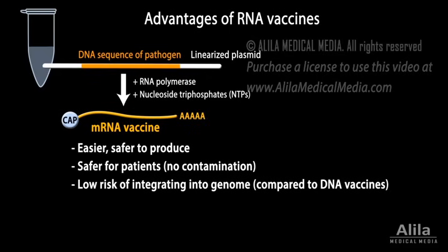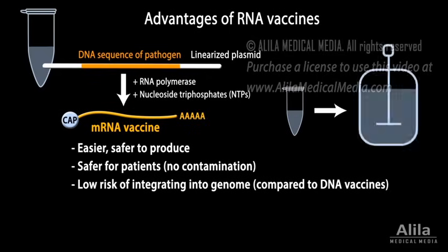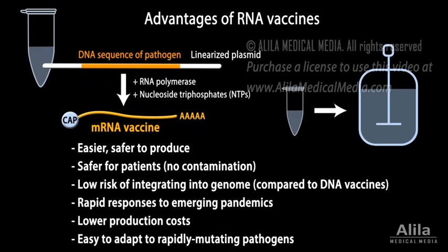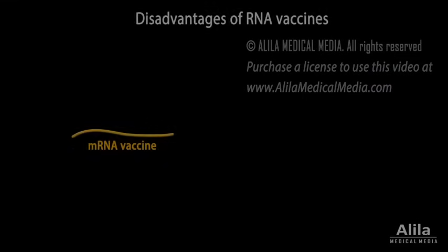The relative simplicity of the production process makes it easier to standardize and scale, enabling rapid responses to emerging pandemics. Other advantages include lower production costs and the ease of tweaking RNA sequences to adapt to rapidly mutating pathogens.